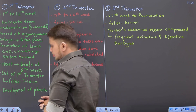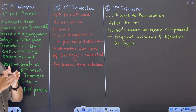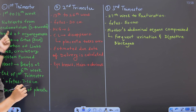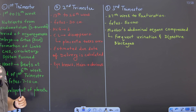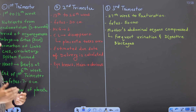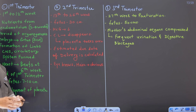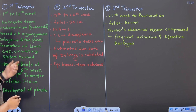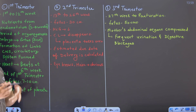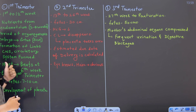The very first trimester starts from 1 to 12 weeks, that is the first 12 weeks of development. Nutrients from the endometrium are given to the developing embryo for the first period of 2 to 4 weeks. Then it is a major period of organogenesis, where the size of the fetus is 3 centimeters. Bohut important phase hai organogenesis ka, jaha pe limbs ban jate hai — matlab haath ho gaye, pair ho gaya, yeh development ho raha hai.